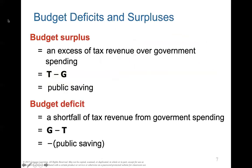A budget surplus is when T minus G is positive — in other words, tax revenue T exceeds government spending G. For example, if T is $100 and G is $50, you have a surplus of 50 — public savings. A budget deficit is when there's a shortfall — the government is spending more than the taxes coming in, giving you a negative number. G is larger than T, so T minus G yields negative public savings — a deficit.